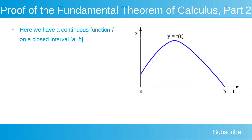When we refer to the closed interval from a to b, we're referring to all of the points between a and b, as well as the point t equal to a and the point t equal to b.